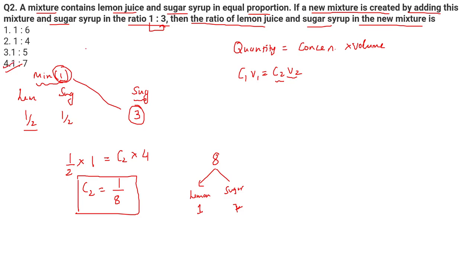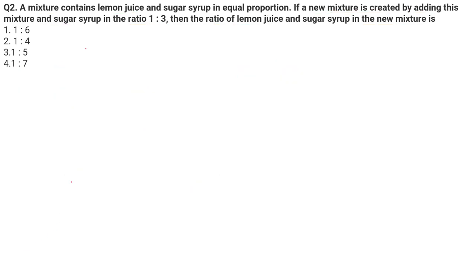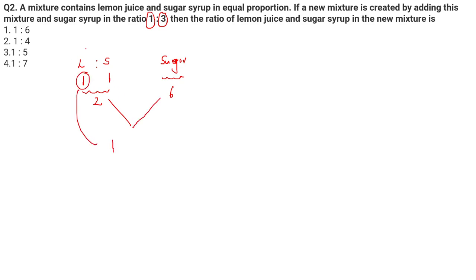Now, this method only works when you're mixing a pure component into an impure component. Let's look at another approach. Lemon and sugar in the first mixture is 1:1 since they are in equal proportion. Sugar in the second component is three times the volume of the first. So the first mixture has two units total, and the sugar has six units. When mixing: only one part of lemon comes in, and sugar contributes one part from here and six parts from there. The answer is 1:7 — an easier approach.